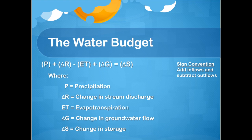Now that we know a little about the water cycle, we can break down the inflows and outflows into the water budget equation. The water budget equation tells us that the change in storage is determined from precipitation, change in stream discharge, evapotranspiration, and change in groundwater flow. Whether we add or subtract the terms depends on whether they are classified as inflows or outflows. Evapotranspiration is always subtracted because it's an outflow, but change in stream discharge and change in groundwater flow can be either added or subtracted depending on the situation.